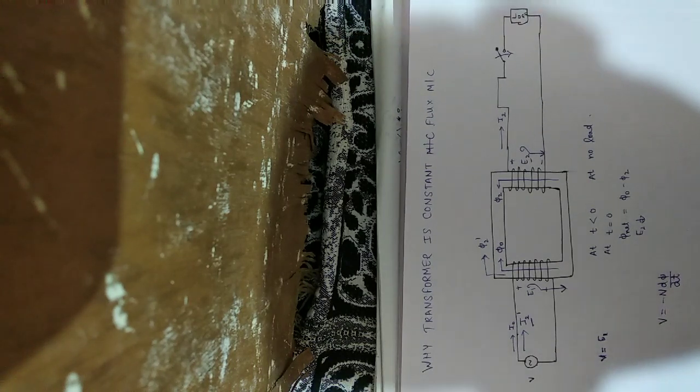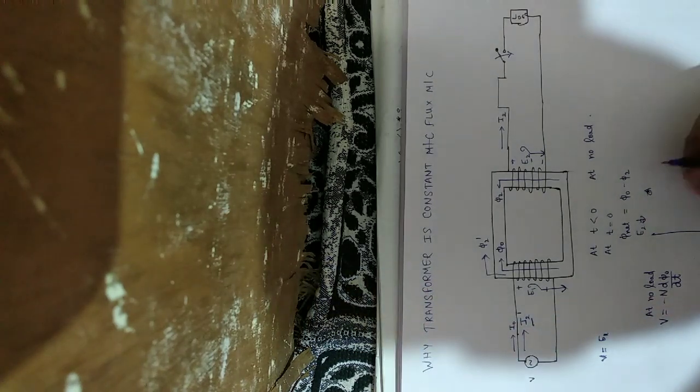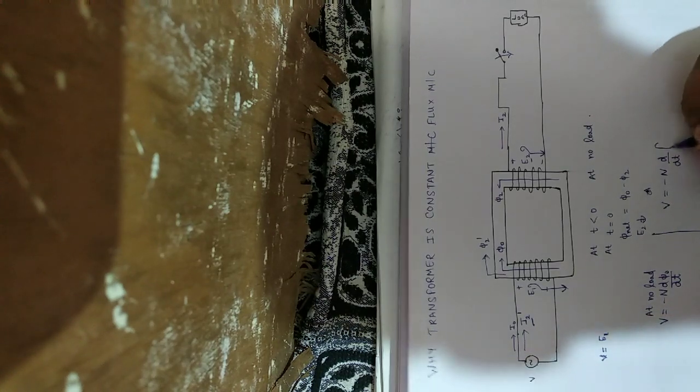At no load condition, v equals minus n d(phi)/dt. The whole at the end is phi0 minus phi2 minus phi2 minus phi2 dash.